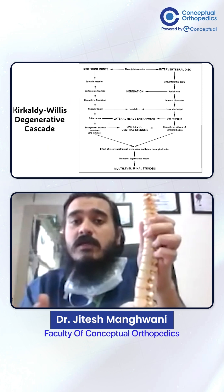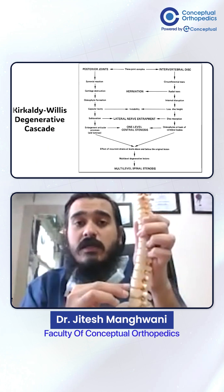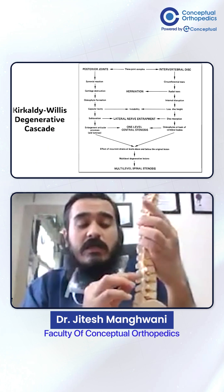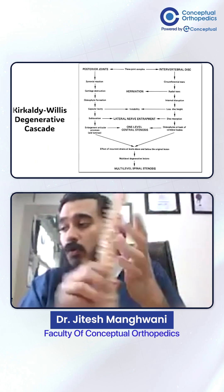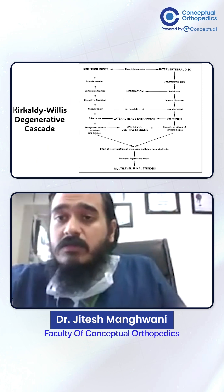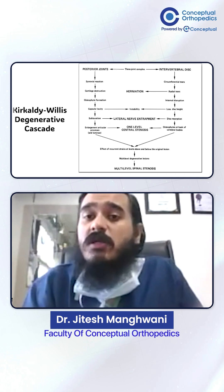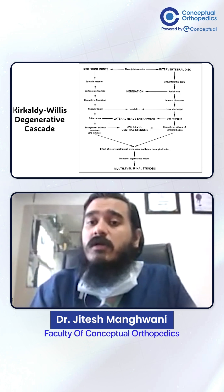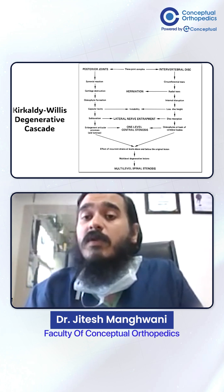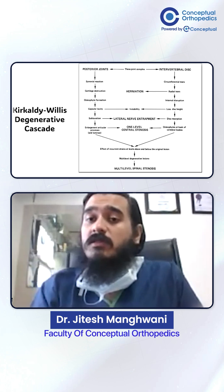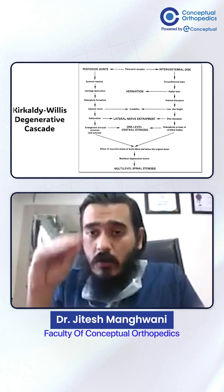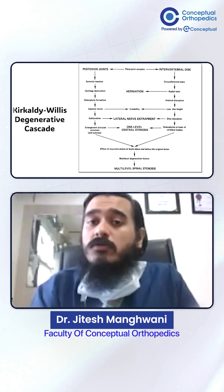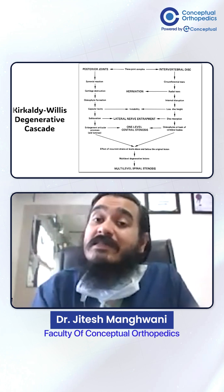What is a three-joint complex? One of the joints is the disc, and the other posterior joints are the facet areas. Whenever there is a circumferential tear or a radial tear in the disc, that will cause herniation. It can also be internal disruption without things coming out, which causes loss of disc height. This loss in disc height can contribute to instability in the spine.